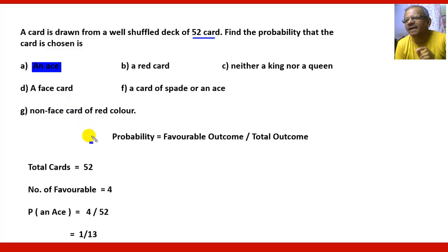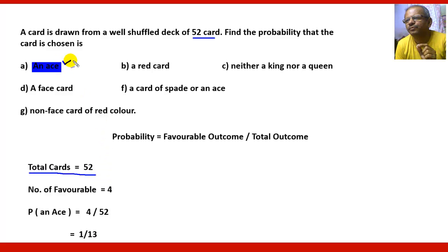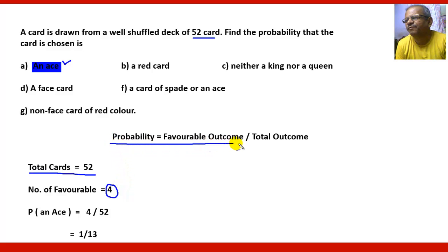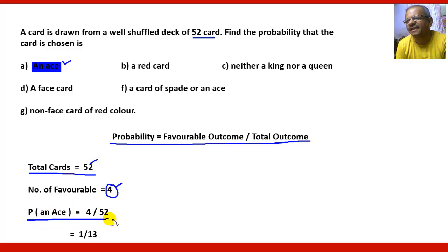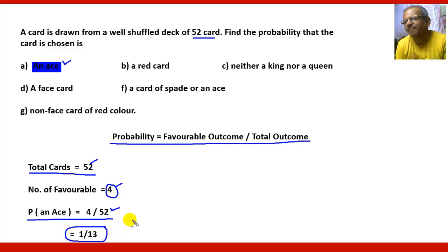There are 52 cards in all and we have to choose an ace. The favorable cards will be 4, because there are 4 aces in a deck of playing cards. As we know, probability equals favorable outcomes divided by total outcomes. So favorable outcomes are 4 and total outcomes are 52, giving us 4 by 52, which simplifies to 1 by 13.